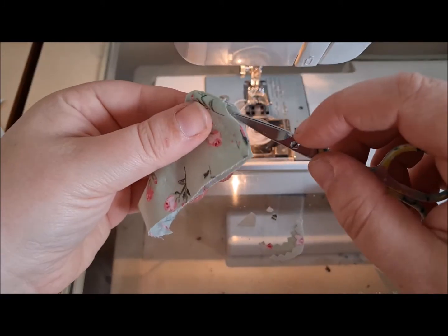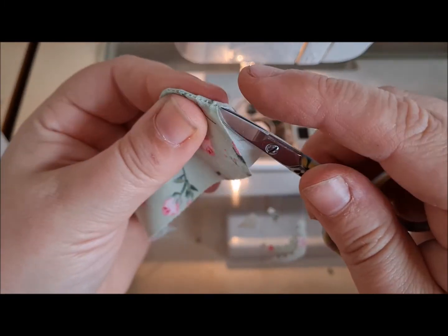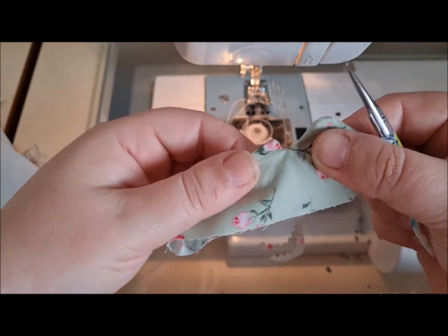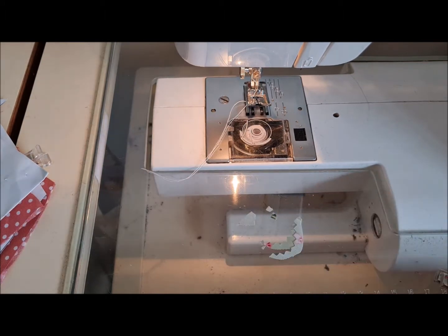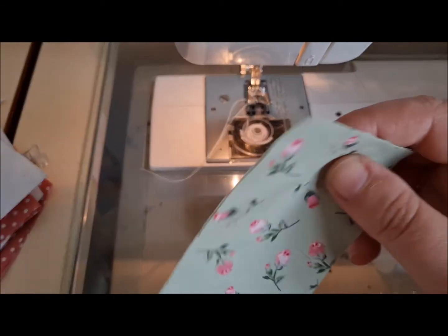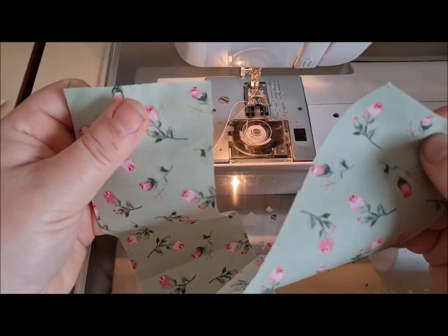Right, so do the other side as well and then put them to one side. Then what we're going to do is prepare the waistband casing. This is for the pajama bottoms. Very simply, we're going to join the two - you've got two casing parts. We're going to put them right sides together.